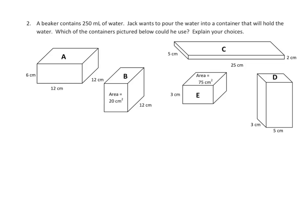Finally, homework: a beaker contains 250 milliliters of water. He wants to pour the water into a container that will hold the water. Which of the containers below could he use? Explain your choices. Well, what we need is a container that is either equal to 250 milliliters in volume or greater than that. So what do we have to do? Well, we have to find the volume of each of these.